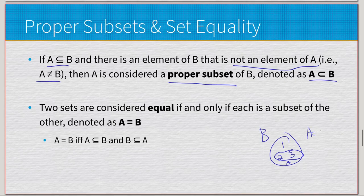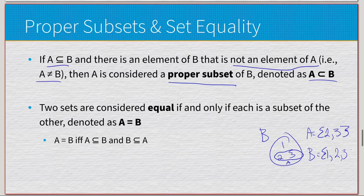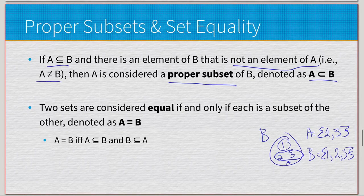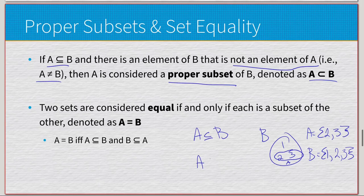Using a Venn diagram example: let A = {2, 3} and B = {1, 2, 3}. The elements of A are two and three; the elements of B are one, two, and three. Since there is an element in B — namely one — that does not exist in A, A is a subset of B, and more specifically A is a proper subset of B.